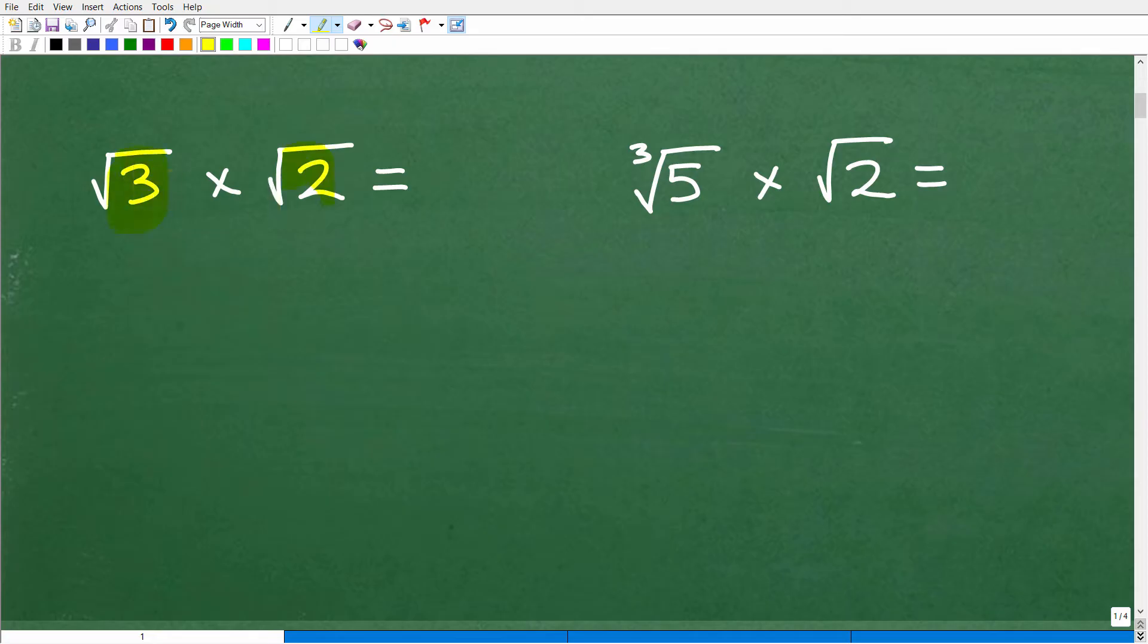So how do we multiply square roots? Well, this is going to be so easy. You're going to be like, wow, I can't believe it's this easy. Well, the square root of 3 times the square root of 2 is equal to the square root of 6. So the square root of 3 times the square root of 2 is equal to the square root of 6. But why? Well, let me go ahead and show you why.